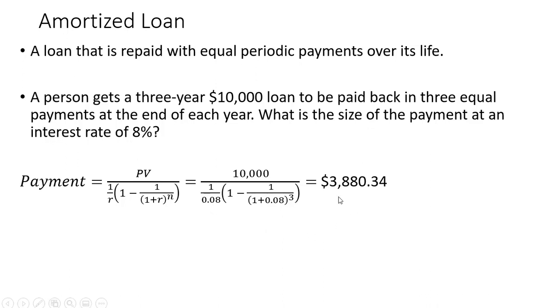And doing the math here this person will make a payment of $3,880.34 at the end of each year for the next three years to pay back this $10,000 loan.